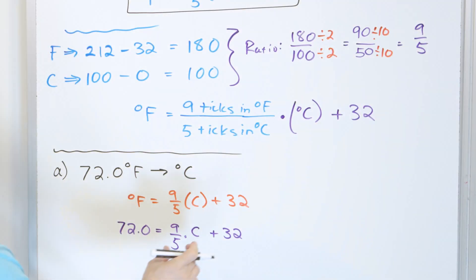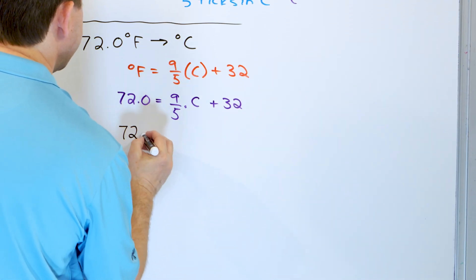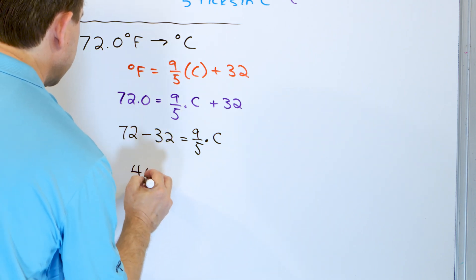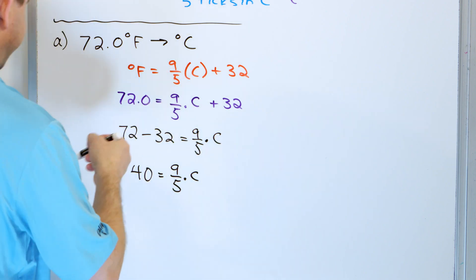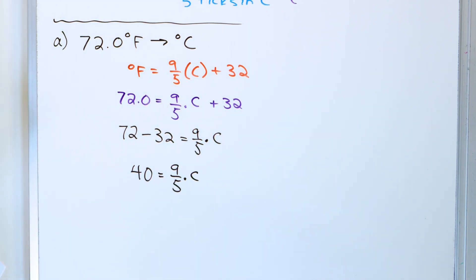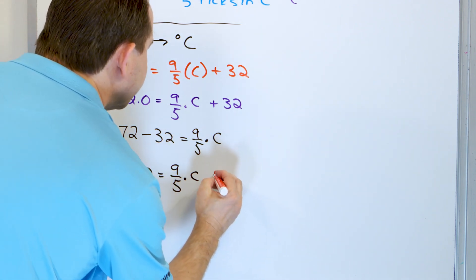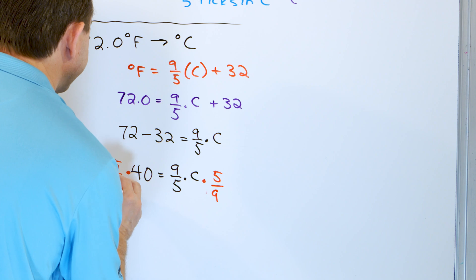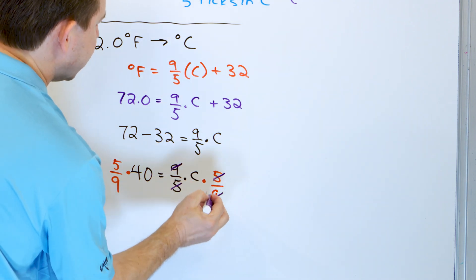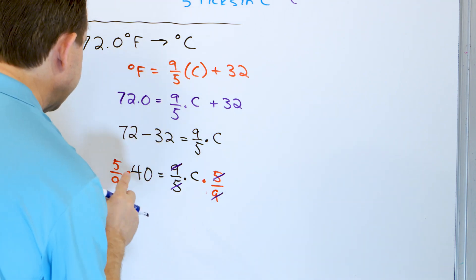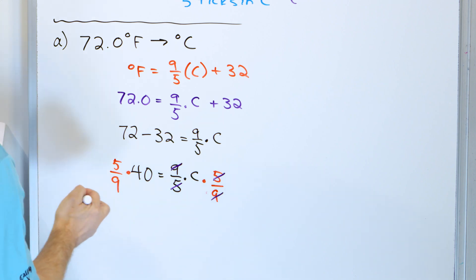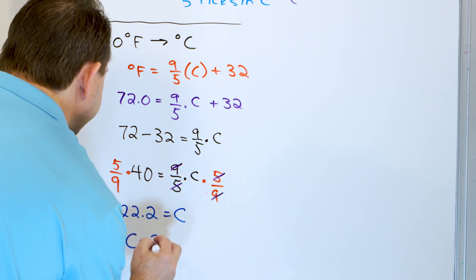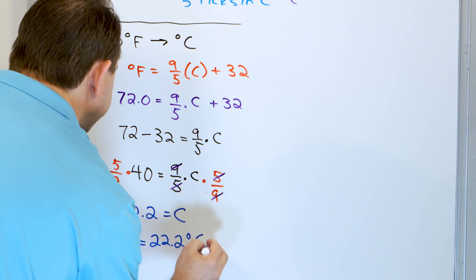The first thing we need to do is get rid of the 32. We subtract 32 from both sides: 72 minus 32 gives us nine-fifths times C. 72 minus 32 equals 40, so we have 40 equals nine-fifths times C. Now, how do we get C by itself? We multiply both sides by five-ninths. The five on top and bottom cancel, and the nine on top and bottom also cancel. So we're left with five times 40 divided by nine. Five times 40 divided by nine gives us 22.2, which equals C. So C equals 22.2 degrees Celsius, and that's the answer.